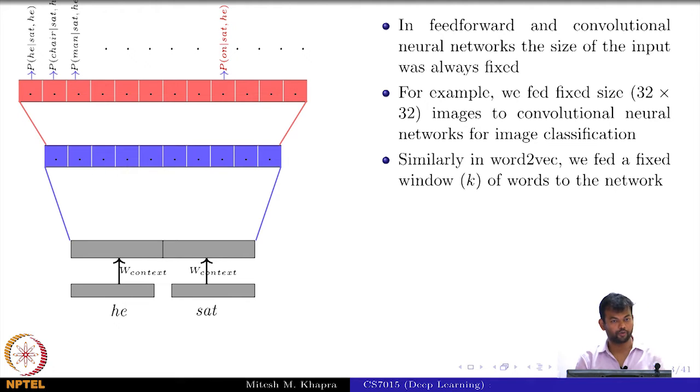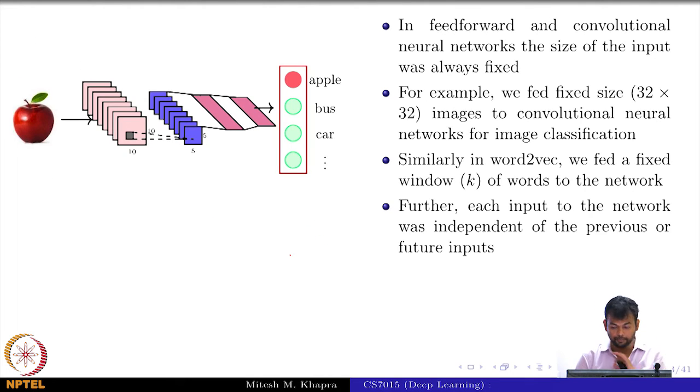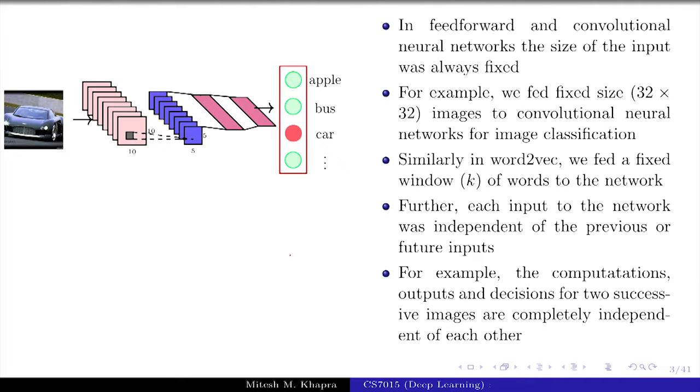Similarly, when we used feedforward neural networks - one example was word2vec where the size of the input was always fixed. We had this input of size 2V, or KV in general if you are looking at a K-word window. This input was not varying from one training instance to another. Secondly, each input to the network was independent of the previous or future inputs. I pass an image of an apple, I get the prediction apple, then I pass some other image and get a different prediction. It does not matter whether my previous image was an apple or a car - it just treats each input independently. There is no dependence between inputs and the size is fixed.